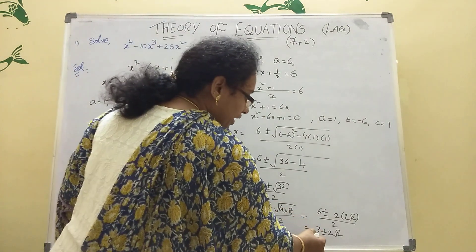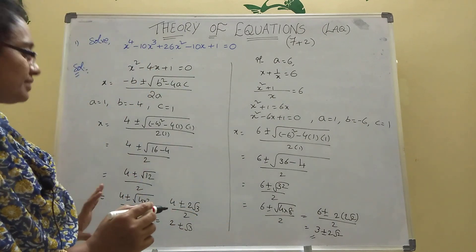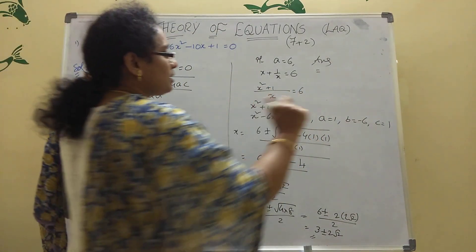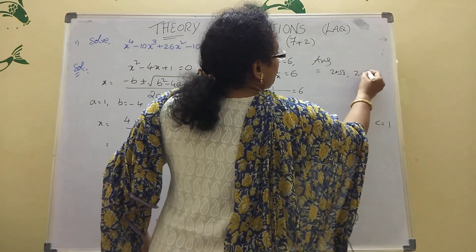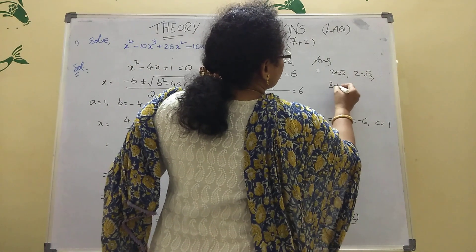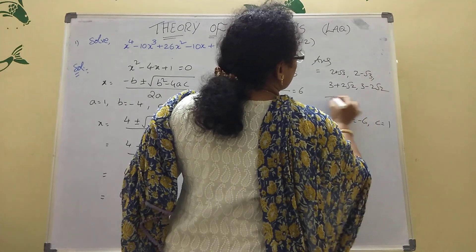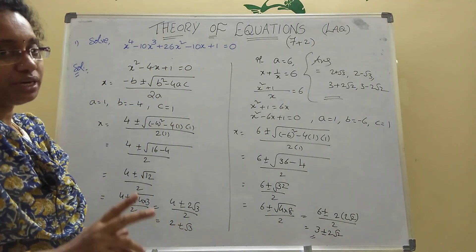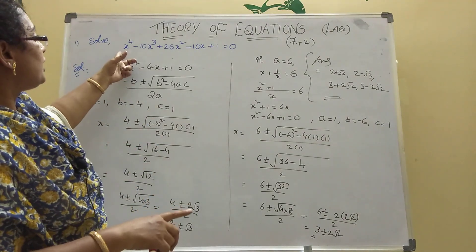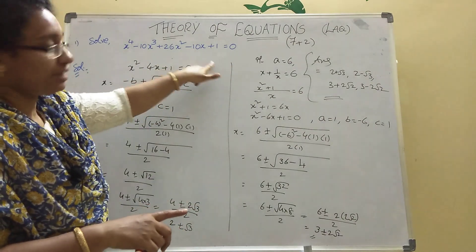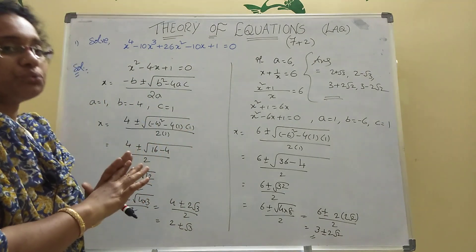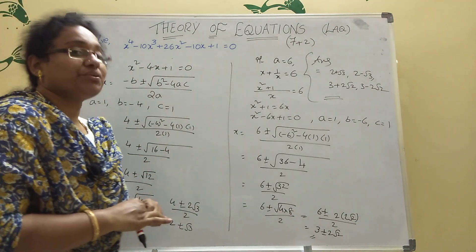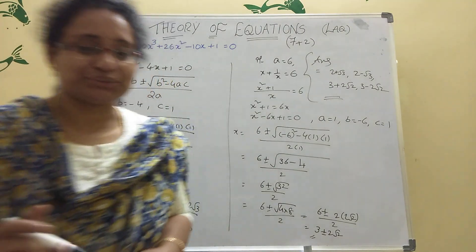Our final answer for x power 4 — so 4 answers: 2 plus root 3, 2 minus root 3, 3 plus 2 root 2, and 3 minus 2 root 2. Class 1 reciprocal equation means A0 equal to An, A1 equal to An-1 — then divide by x square and it becomes easy. Don't lose marks — we will get good marks. Thank you very much, please subscribe and share my channel.